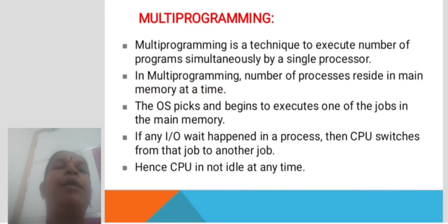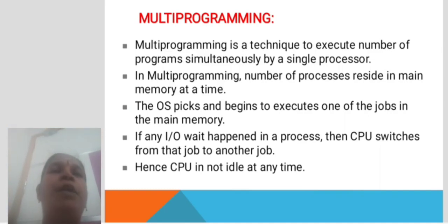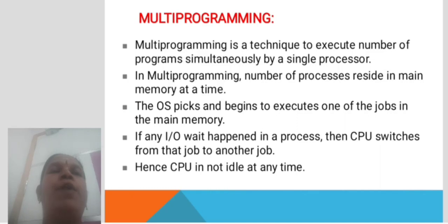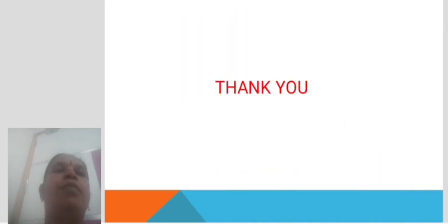Multiprogramming. Multiprogramming is a technique to execute a number of programs simultaneously using a single processor. In multiprogramming, a number of processes reside in main memory at a time. The OS picks and begins to execute one of the jobs in main memory. If any I/O wait happens in a process, the CPU switches from that job to another job. Hence, the CPU is not idle at any time. Thank you.